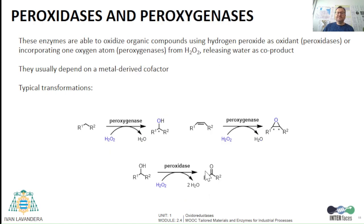Finally, peroxidases and peroxygenases can oxidize organic compounds using hydrogen peroxide as oxidant — in the case of peroxidases — or incorporating one oxygen atom from hydrogen peroxide — in the case of peroxygenases — releasing in both cases water as co-product. They usually depend on a metal-derived cofactor, and they have been applied in the oxidation, among others, of alkanes, alkenes, and alcohols.